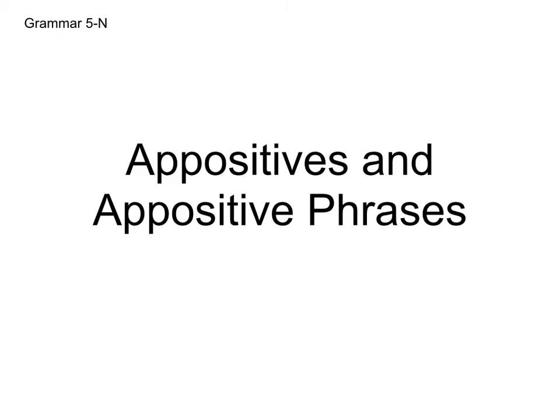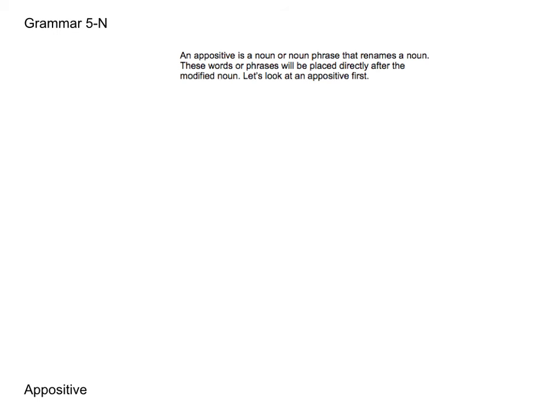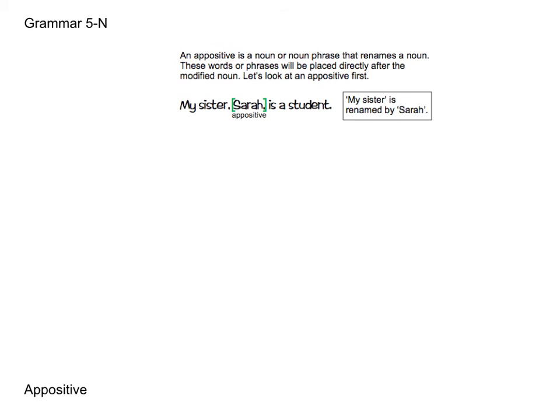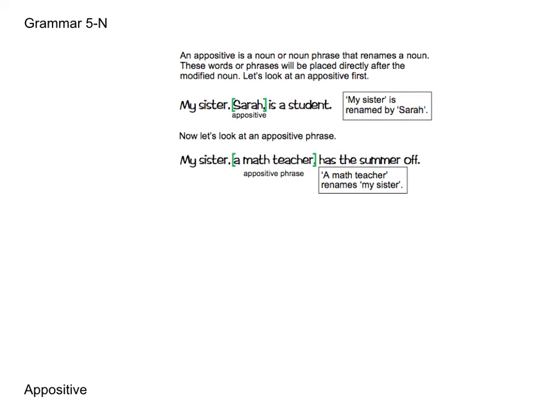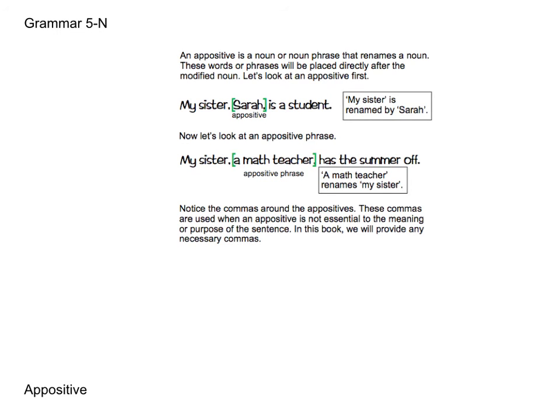Now we'll cover appositives and appositive phrases, which will take up the other part of this booklet. An appositive is a noun or noun phrase that renames another noun in the sentence. That other noun could be a subject, direct object, object of preposition, indirect object, or predicate nominative. An appositive or appositive phrase is always placed directly after the modified noun, so it's easy to find — you'll essentially have a double noun or a phrase following a noun. For example: My sister, Sarah, is a student — Sarah is the appositive, renaming who my sister is. And: My sister, a math teacher, has the summer off — the appositive phrase "a math teacher" renames my sister.